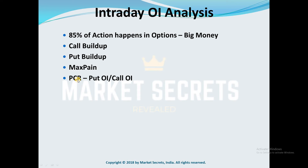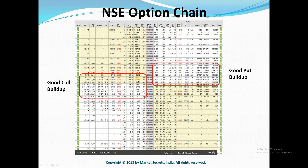The next item is PCR, which is nothing but put-call ratio. It is a simple division of put open interest by call open interest. If you look at the data, this is the open interest for calls and this is the open interest for puts. To calculate PCR, you need to divide the total open interest of puts by total open interest of calls.